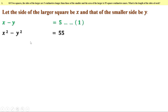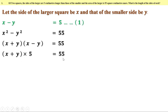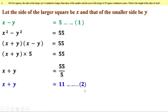Given that the area of the larger square is 55 square centimeters more: x² − y² = 55. Using the identity x² − y² = (x + y)(x − y), we write (x + y)(x − y) = 55. Since x − y = 5, we replace it: (x + y)·5 = 55, therefore x + y = 11. This is the second equation.